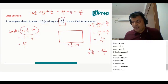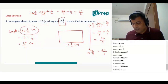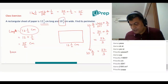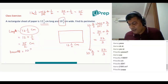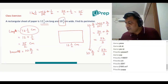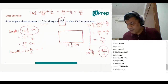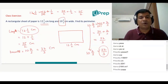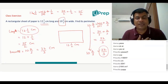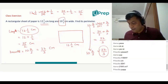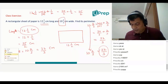So, we have done that: 12 and 1 by 2 is 25 by 2. That is your length — 25 by 2 centimeters. Now let us get the breadth. The breadth given is 10 and 2 by 3, which we just calculated is 32 by 3 centimeters. So, the length and breadth are both given in centimeters. What is he asking us to find? It is the perimeter.